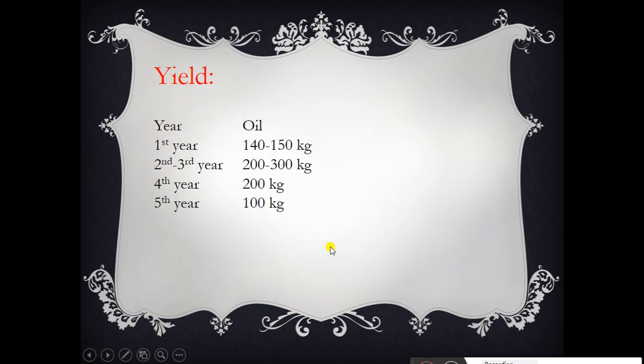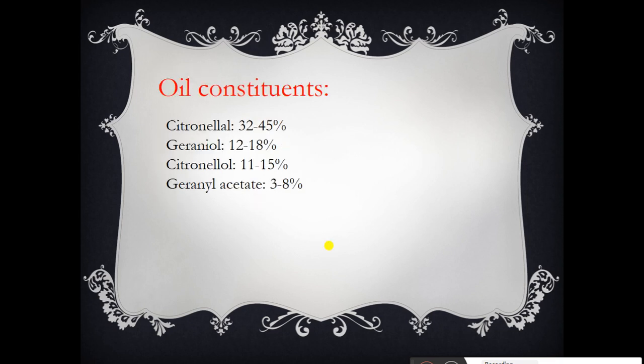Regarding yield: in the first year, 140 to 150 kg of oil per hectare is obtained. In the second to third year, 200 to 300 kg per hectare. In the fourth year, around 200 kg, and in the fifth year, approximately 100 kg of oil per hectare.